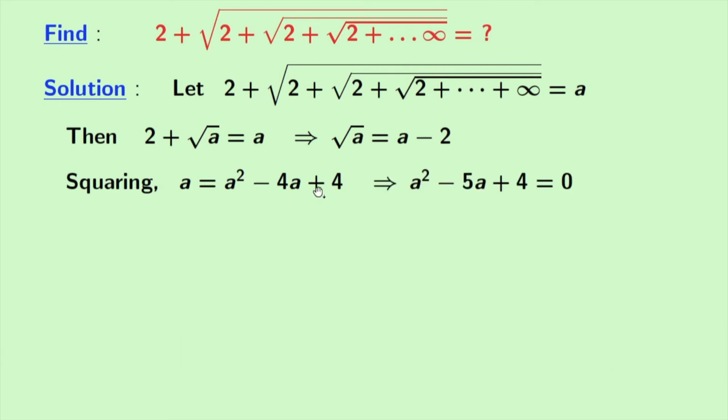Now after simplification, we get a square minus 5a plus 4 is equal to 0. Now we can write minus 5a is equal to minus a minus 4a. Rewriting that we get a square minus 4a minus a plus 4 is equal to 0.